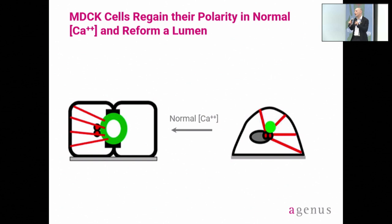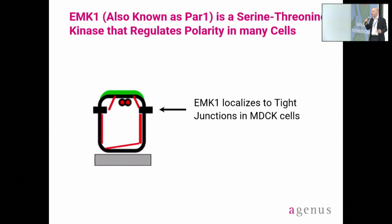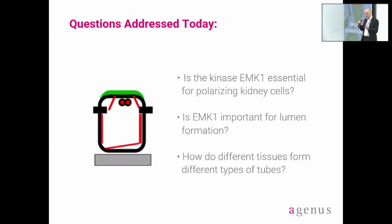This is all we're trying to do — that's why next-generation immunotherapy is different. Let's go into the gene in a bit more detail. This gene is actually a kinase, one of the major drug targets that regulates polarity in many cells. There are about 25 kinase inhibitors that are FDA-approved, but they're just targeting one gene. Here, this gene localizes to tight junctions in these kidney cells that keep the kidney cells together. So one home slide, one question slide might be: is this kinase important for polarizing kidney cells? What does polarizing really mean? Is it important to form tubes, and how do different tissues form different types of tubes?